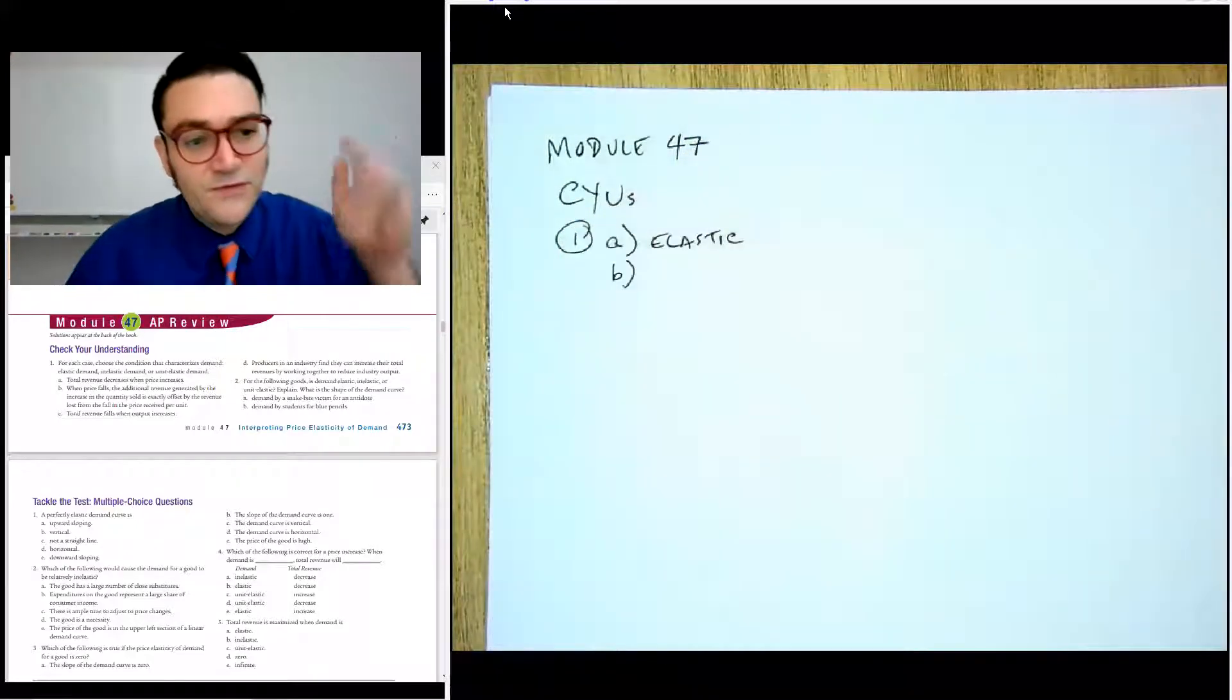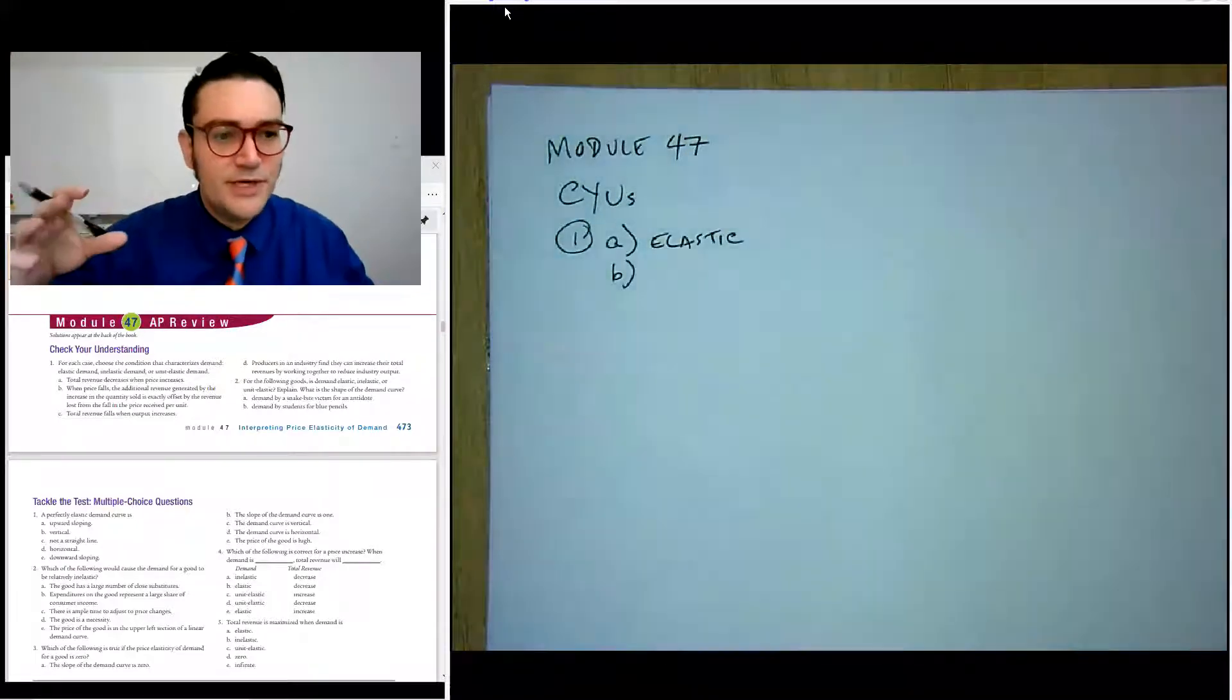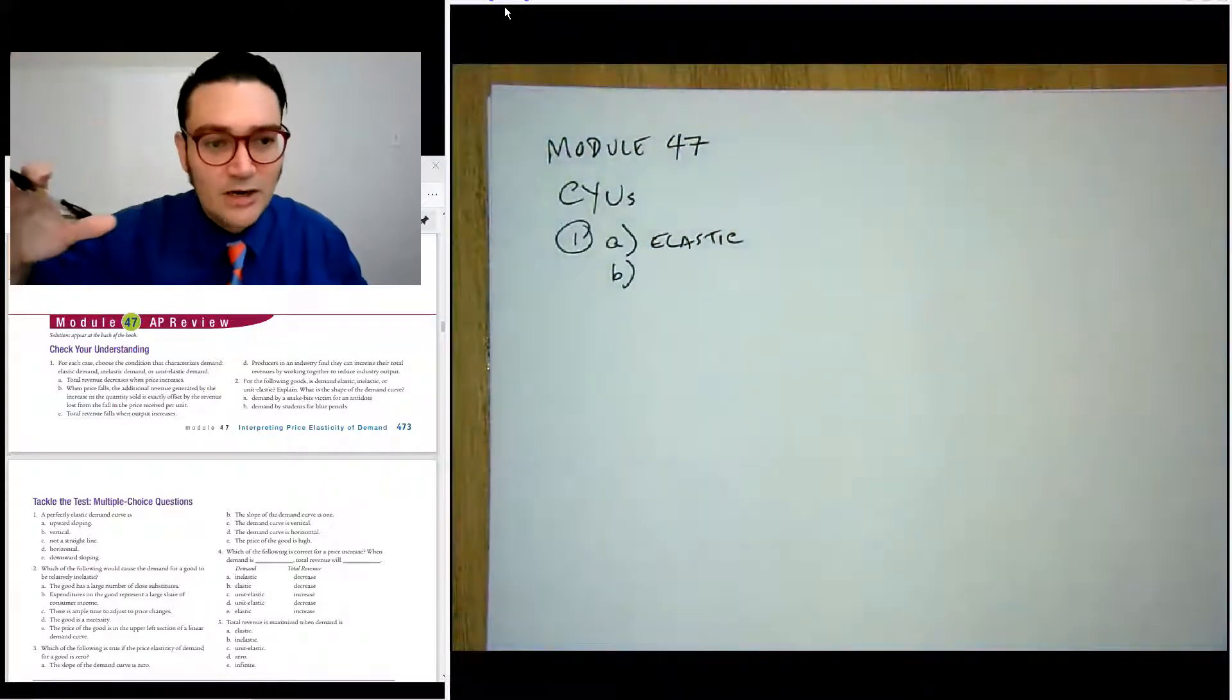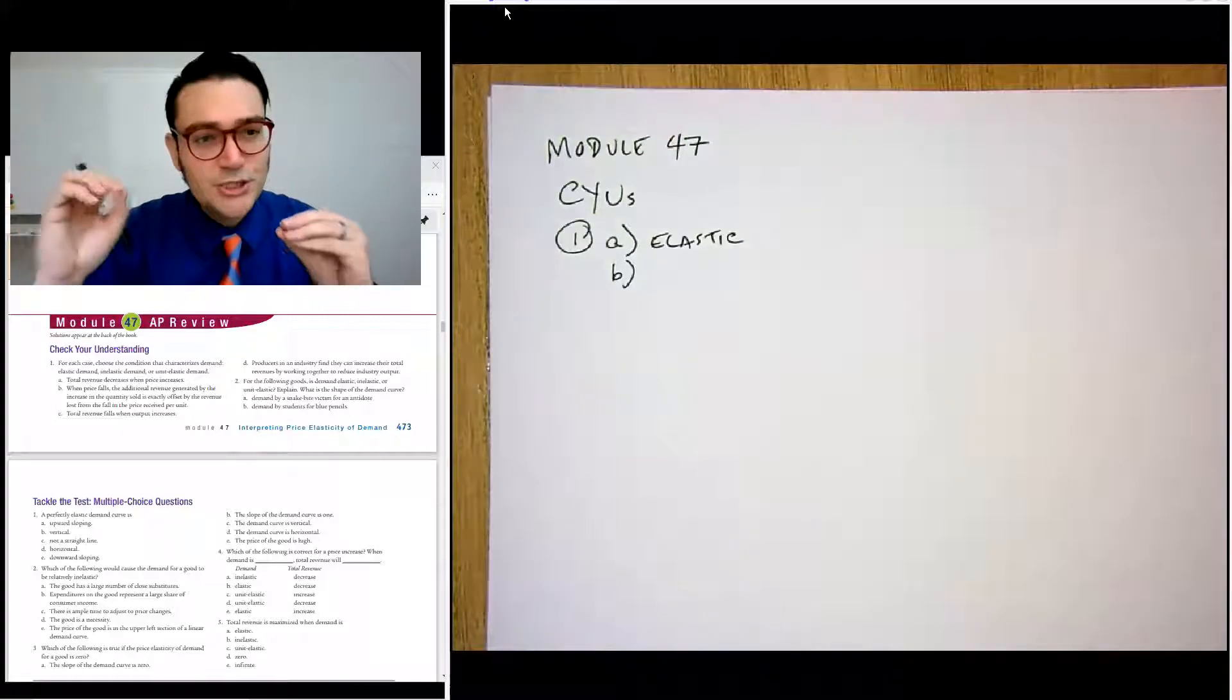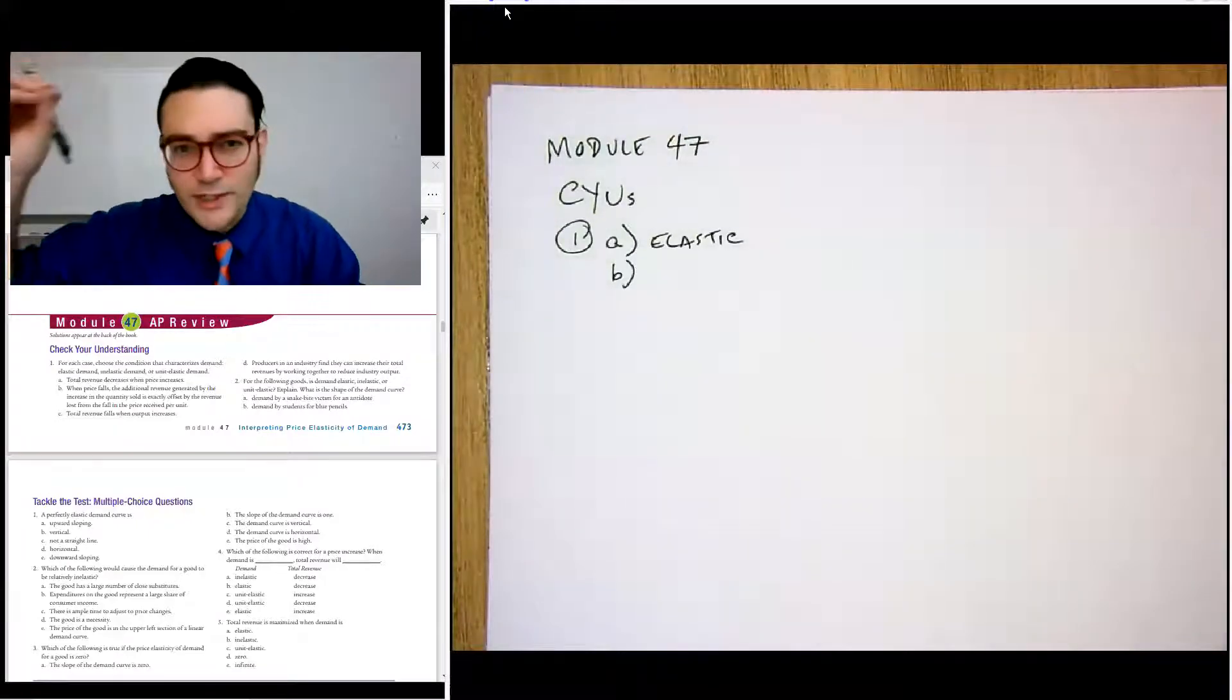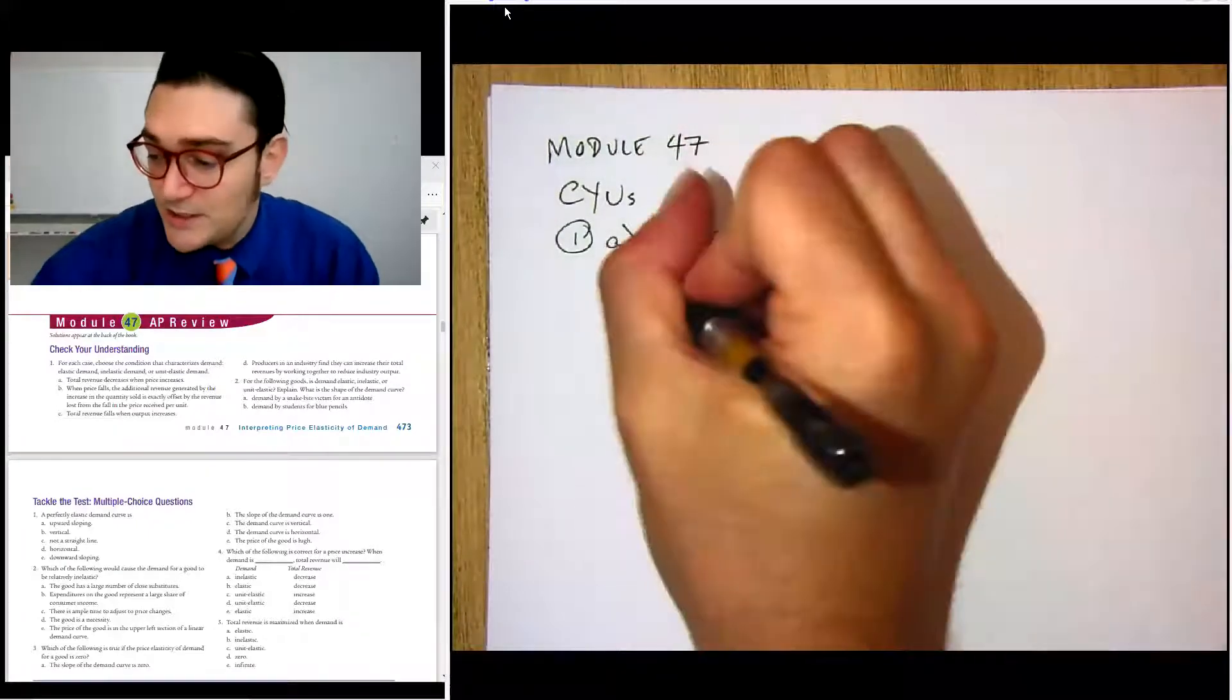B says when price falls, additional revenue generated is exactly offset by the revenue loss. So the total revenue isn't changing. In other words, you're at the maximum point of total revenue. So we're at unit elastic.